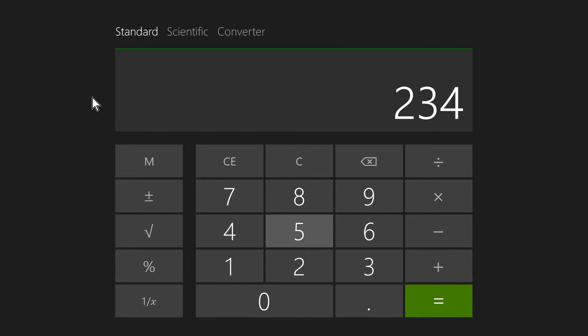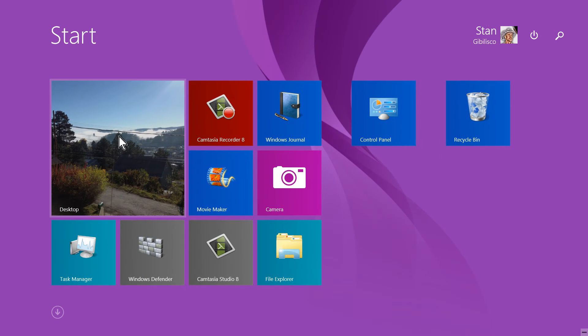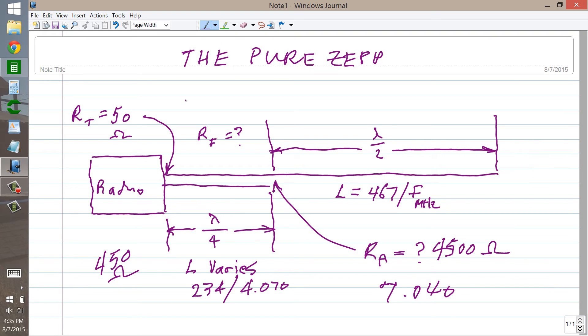234 divided by 7.04 equals about 33 feet, maybe 5 inches. Okay, so maybe 33 feet 5 inches for this. Maybe about 66 and 1 half feet for this.